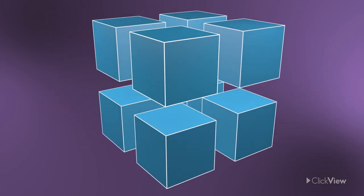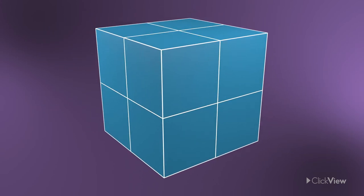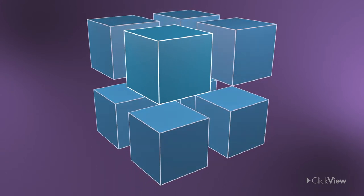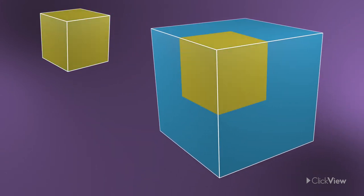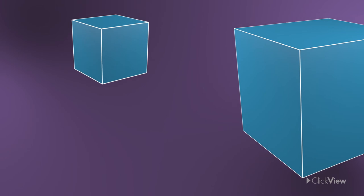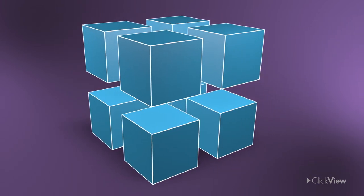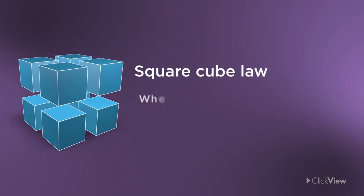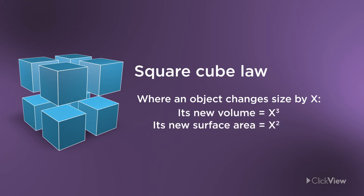Putting it another way, one of the eight smaller blocks makes up one-eighth of the big block's volume. But one of the eight smaller blocks is not one-eighth of the old block's surface area. This is the square cube law. Changes in an object's size means its volume needs to be cubed, but its surface area only needs to be squared.